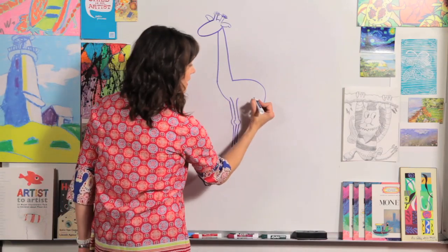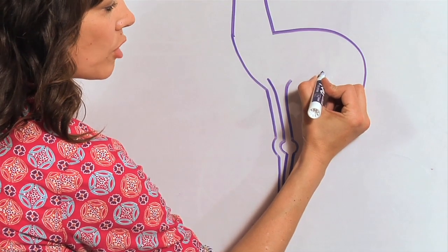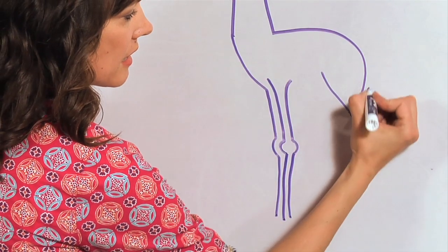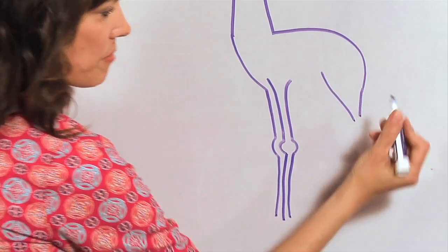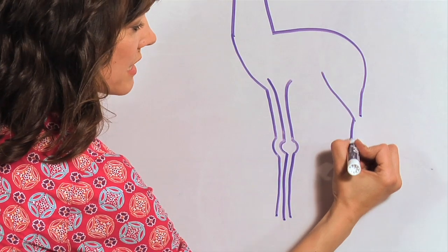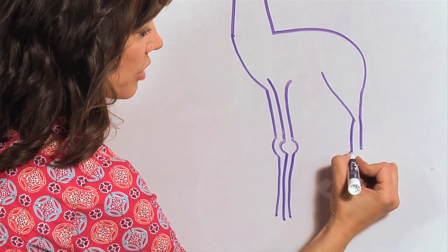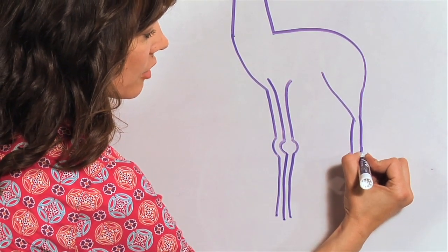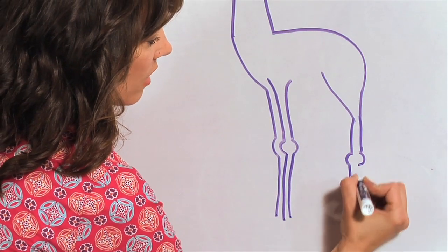Let's do the back leg. We're going to come up here just a little bit, and we're going to come down. So see how we made that line kind of come in, and now we'll go straight down like we did before, and we'll try to put our knee at the same place, curve out and down.